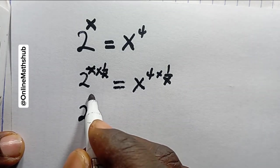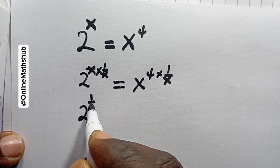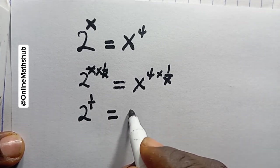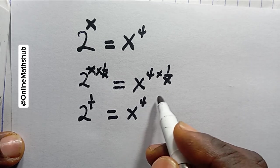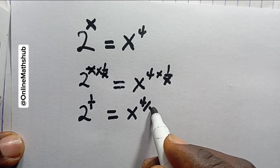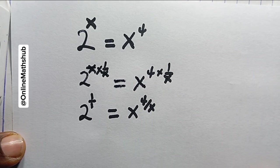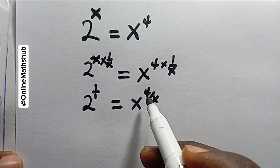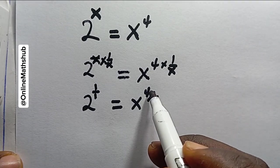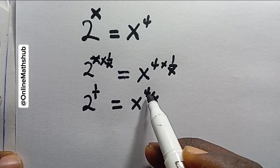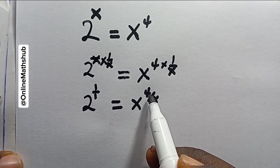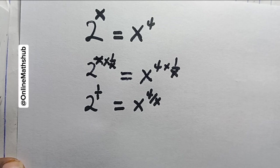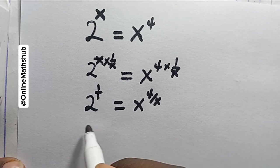What I'm going to do next is raise both sides to power 1 over 4 so I can remove this 4 right here and be able to solve the equation.